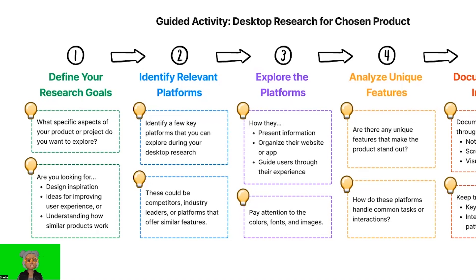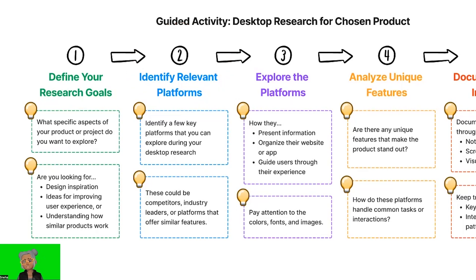Step 2: Identify relevant platforms. Think about the platforms or websites that are similar to your product or project. Where can you find products or services that align with what you're working on? Identify a few key platforms to explore during your desktop research. These could be competitors, industry leaders, or platforms that offer similar features.